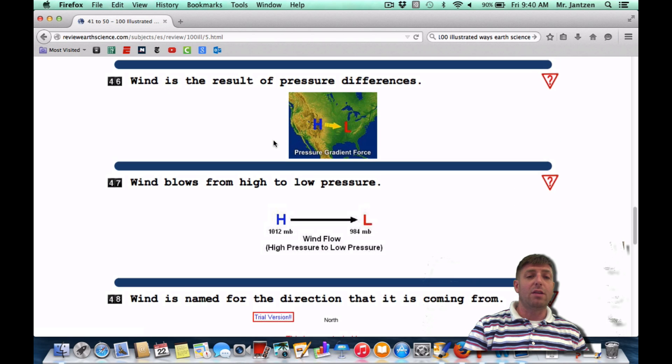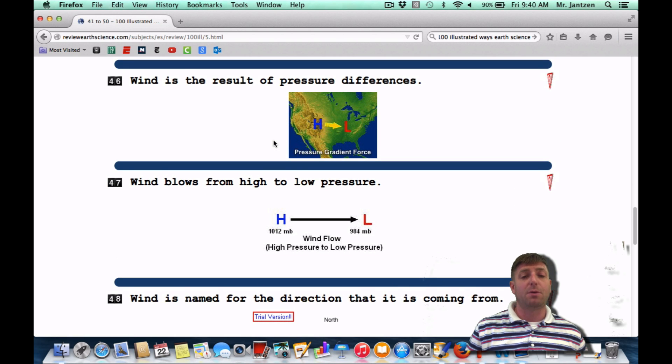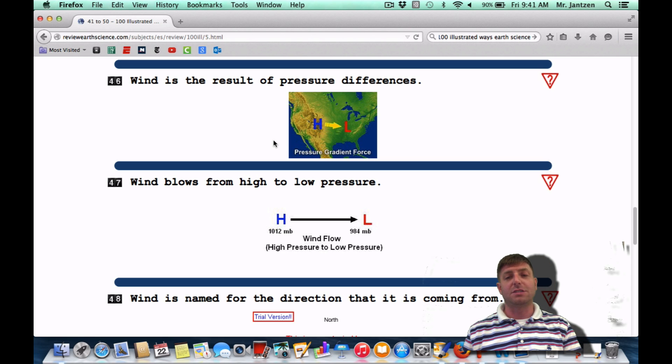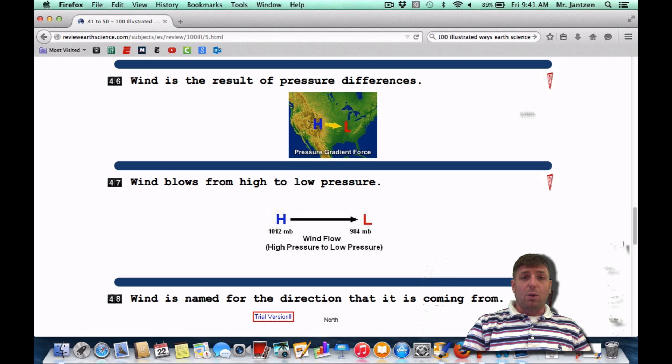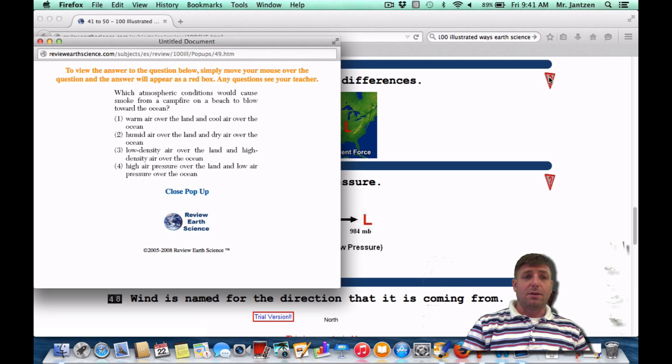Number 46, wind is the result of pressure differences. That's what causes wind. Going from an area of high to an area of low. You're going from an area that has a lot of air molecules together to an area where the molecules are kind of spread out. If you have a big difference between that, you'll have a stronger wind. If there's a slight difference between the high and low pressure, it will just be kind of like a slight breeze. So wind is caused by pressure differences.